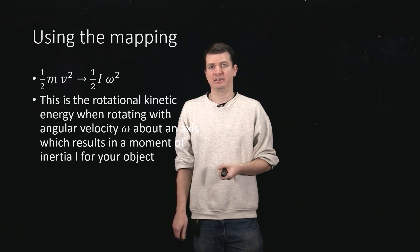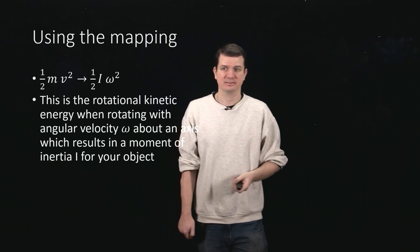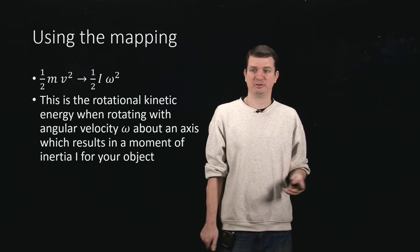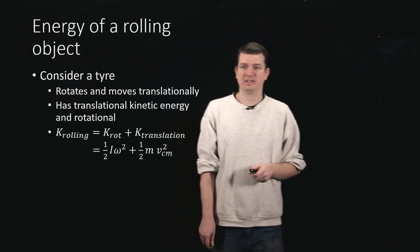So we call that the rotational kinetic energy of the object, which is sitting there rotating about some axis about which it has moment of inertia I, and it's rotating with angular velocity omega around that axis.